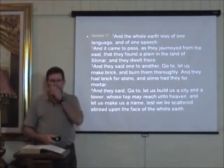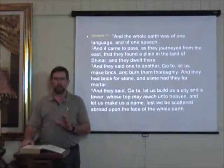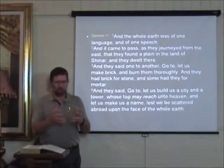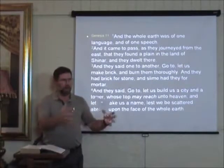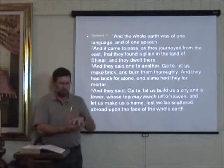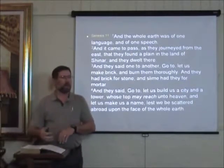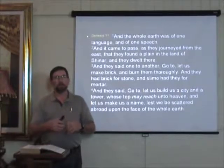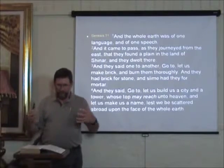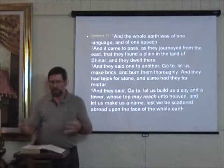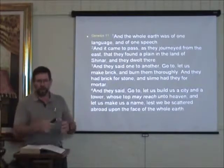Verse 3: 'And they said one to another, go to, let us make brick and burn them thoroughly. And they had brick for stone, and slime had they for mortar.' Slime here is generally believed to be an asphalt-type substance, like tar. Archaeologists have found ancient mud brick walls mortared together with asphalt tar, which is why slime is understood that way. You may remember in Genesis where Abraham fights the five kings — it mentions the valley of Sodom was full of slime pits, meaning asphalt pits, much like the La Brea Tar Pits in California.